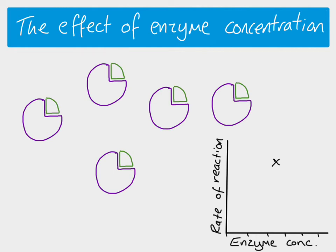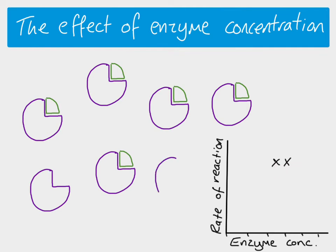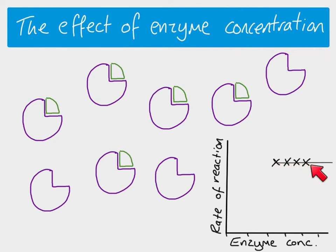If you increase the number of enzymes — increase the enzyme concentration — this extra enzyme cannot increase the rate of reaction because there's not enough substrate for this enzyme to be able to react at the same time as the others. So although we've increased the enzyme concentration, the rate of reaction stays the same. If we increase the enzyme concentration further, the rate of reaction is going to stay the same, because all of the active sites were already filled, so adding more enzymes makes no difference.